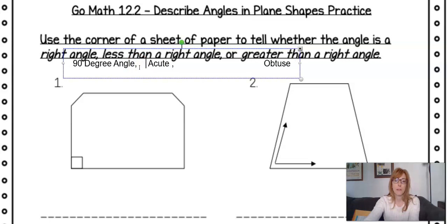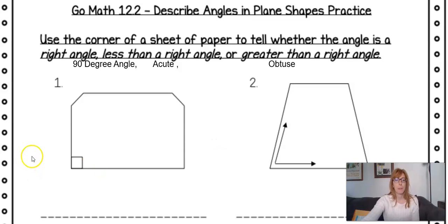So you have 90 degree angle. You have an acute angle and you have an obtuse angle. All right.